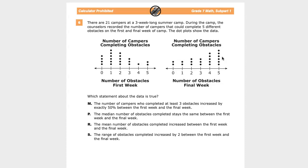M, the number of campers who completed at least three obstacles increased by exactly 50% between the first week and final week. P, the median number of obstacles completed stays the same between the first week and the final week. R, the mean number of obstacles completed increased between the first week and the final week. And S, the range of obstacles completed increased by two between the first week and the final week.